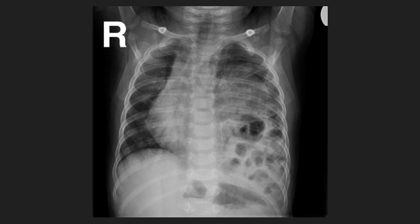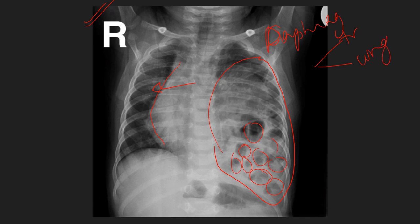Another important image-based question: air-filled lucencies in the left hemithorax with mediastinal shift of the heart to the right — these bowel-loop-like lucencies occupying the left hemithorax with absence of the normal gastric shadow indicate a diaphragmatic hernia, which can be traumatic or congenital depending on the clinical setting.